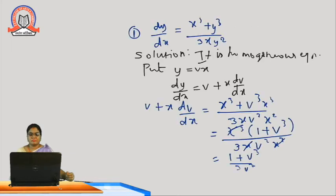Let us now see one problem. dy/dx equal to (x³ plus y³) upon 3xy². This is a homogeneous equation because the variables x and y have degree 3. Using the substitution y equal to vx, dy/dx equal to v plus x dv/dx. Substituting in the given question, after cancelling, we get v plus x dv/dx equal to (1 plus v³) by 3v².